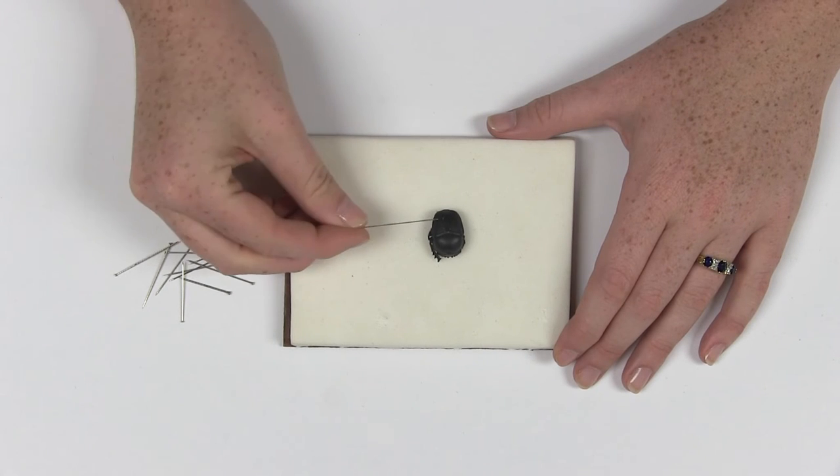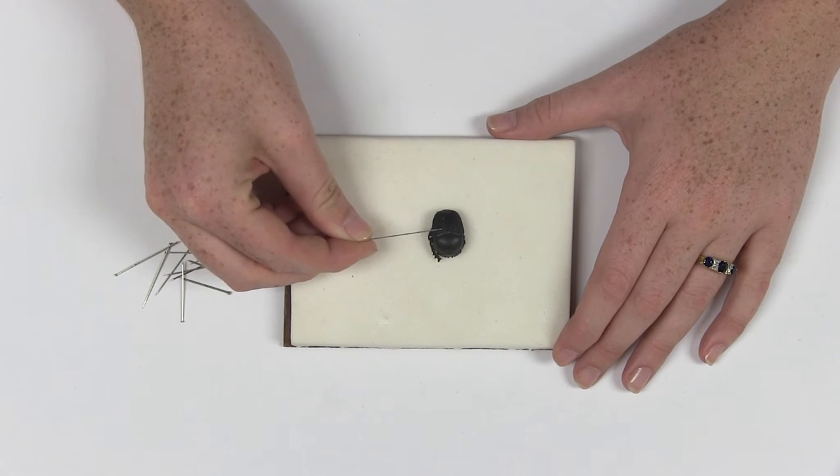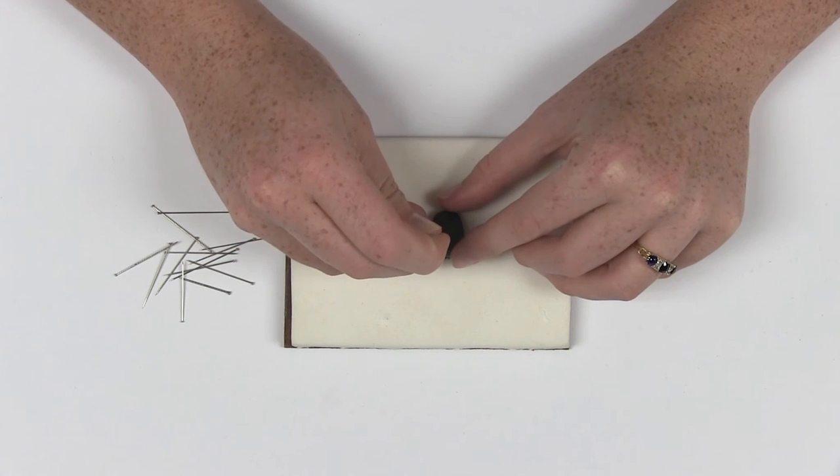Pin the beetle through the right side of the elytron. You may have to wiggle the pin or apply some force because the elytra can be very hard.